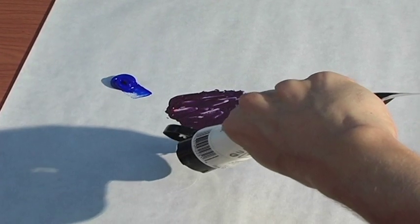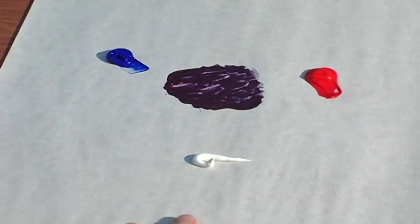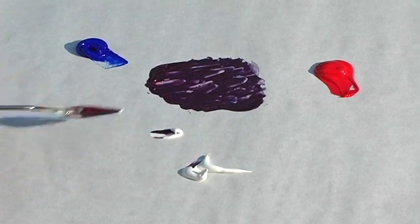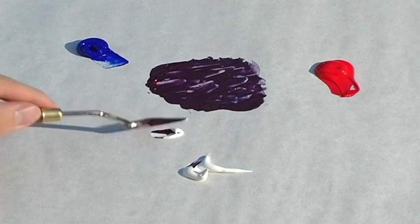So real quick, add some white paint to our paper palette. Take some of this in here, make a new little mixing area because there's a whole lot of purple paint and you don't necessarily need to put tons of white in there.